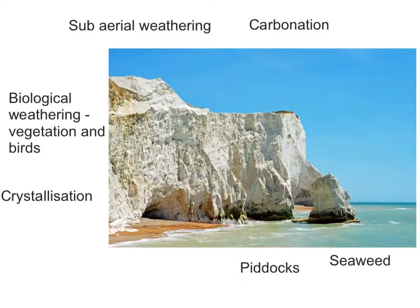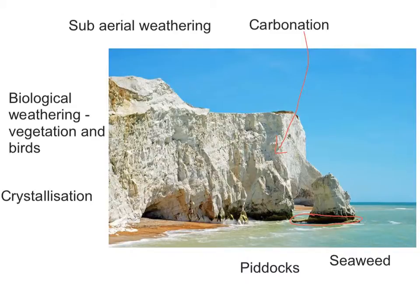Finally, let's look at this photo — the question is how many processes of weathering can you spot? You can infer all sorts. It's chalk or limestone, so you can assume there's some kind of carbonation process going on: the weak carbonic acid in rainwater mixing with the calcium carbonate will weaken the cliff. At the bottom of the stack you can see an area of flat rock, and you can infer that some kind of biological weathering is going on here by very small shell-like creatures called piddocks, which drill into the flat rock.